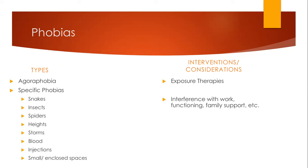Phobias often peak in childhood, and then we see another peak in the early twenties. They affect women more than men. Phobias can cause a strong vasovagal response, so the individual can have really high heart rate and a tank in blood pressure, causing feelings of faintness. Treatment for phobias, as mentioned, is exposure therapy, improving the individual's functioning, and improving their social relations so they have more support to not avoid those situations.